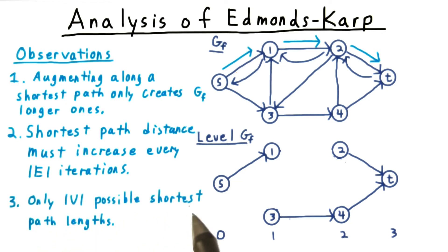And lastly, there are only V possible shortest path lengths. So that completes the theorem. For each possible path length, we might have up to E iterations.